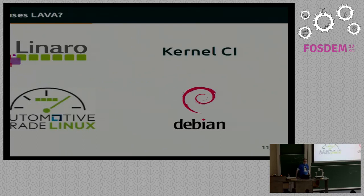LAVA is currently in use by multiple projects and companies — for example, by Linaro for their board farm in Cambridge, by kernel CI for boot tests of current kernel trees, and by Automotive Grade Linux and Debian as GNU Linux distributions.